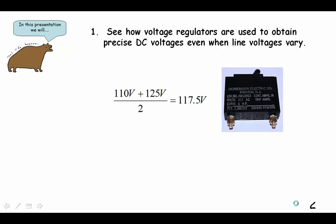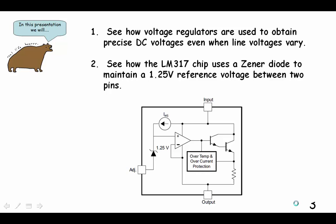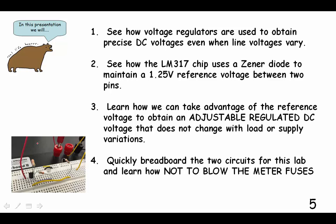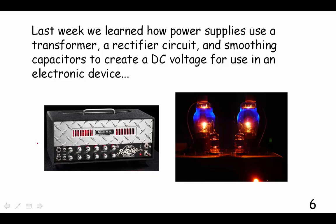First we'll see how voltage regulators are used to obtain precise DC voltages even when line voltages vary. Then we'll see how the LM317 chip uses a Zener diode to maintain a 1.25 volt reference voltage between two pins. We'll learn how we can take advantage of the reference voltage to create an adjustable regulated DC voltage that does not change with load or supply variations. And finally, we'll quickly breadboard the two circuits for this lab and learn how not to blow the fuses.